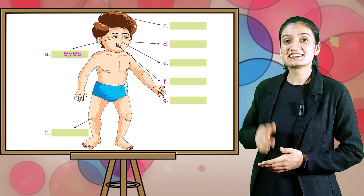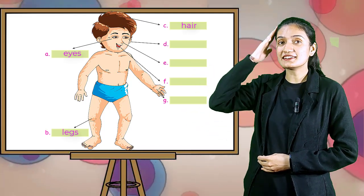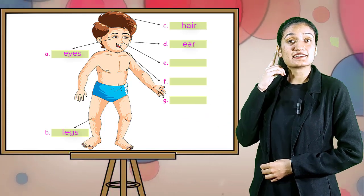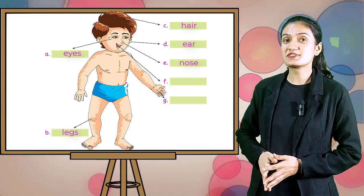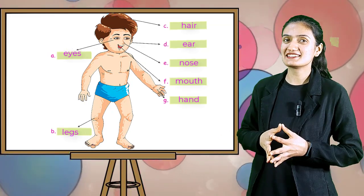Here is eyes. B, legs. T, hair. D, ear. E, nose. F, mouth. G, hand.